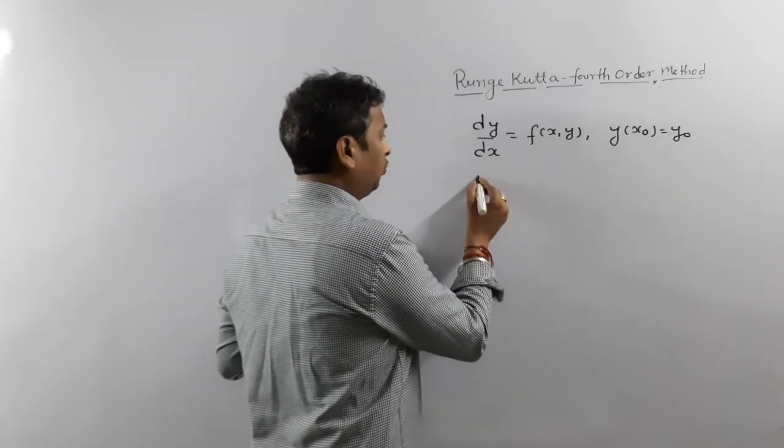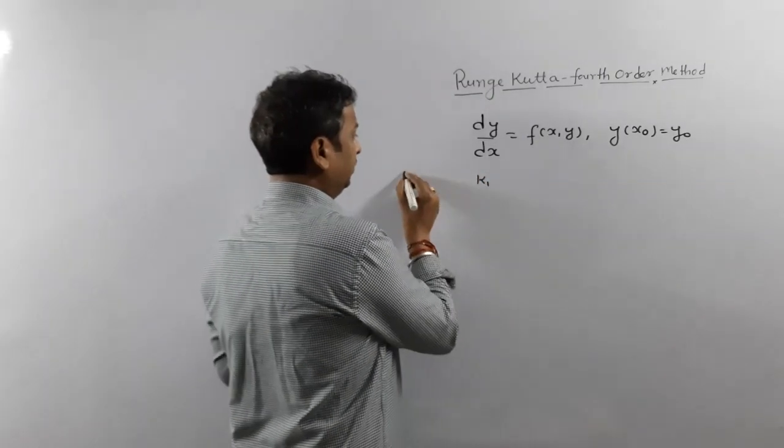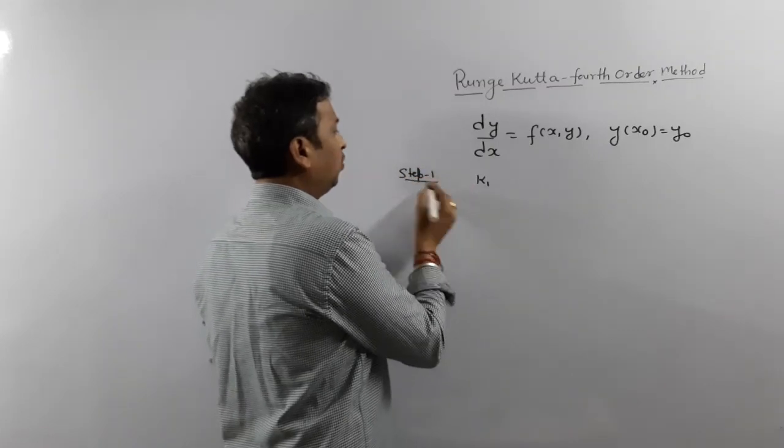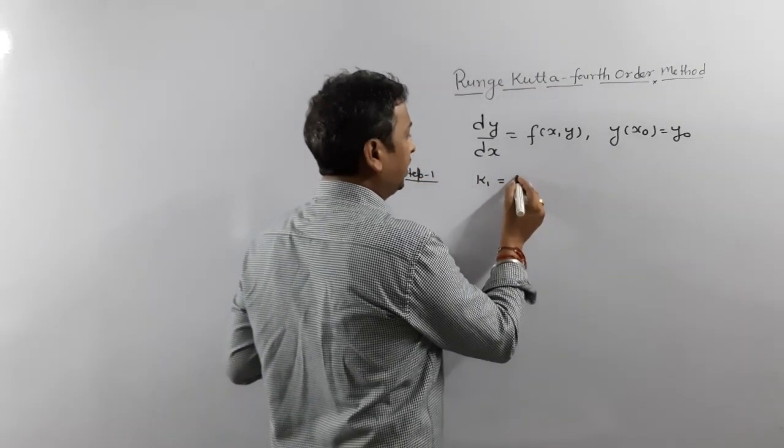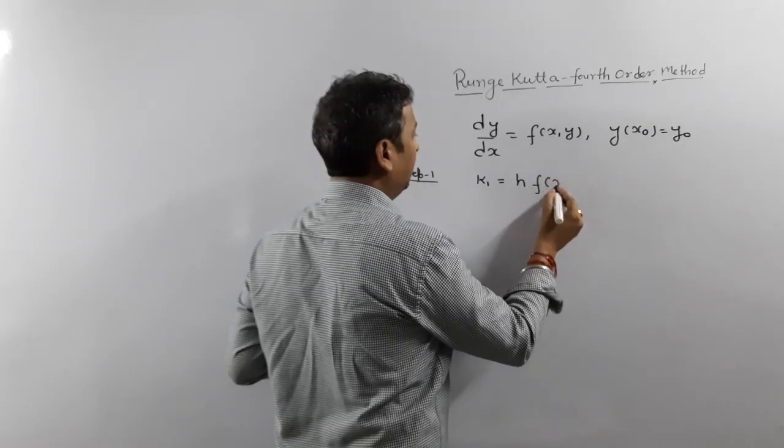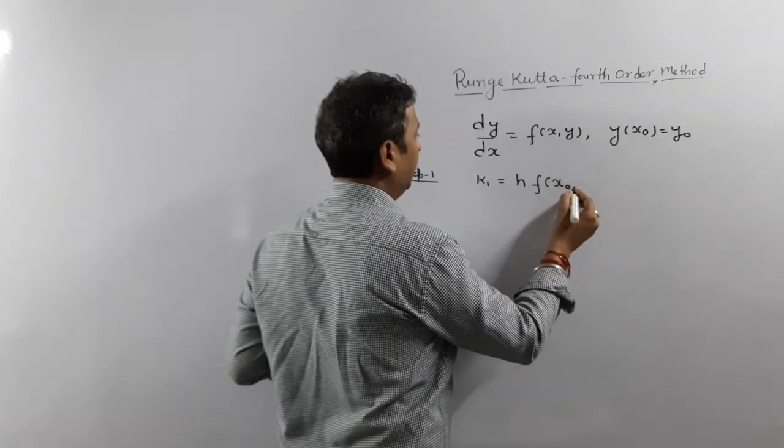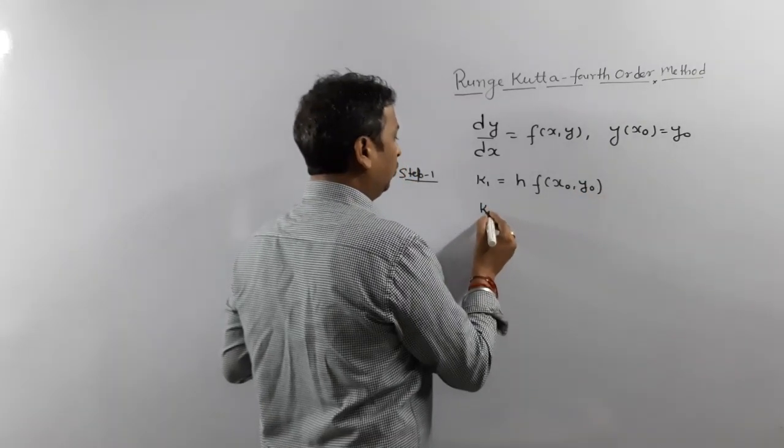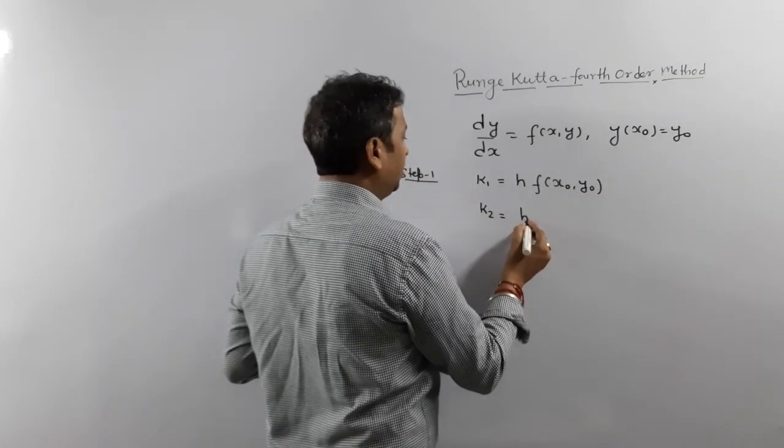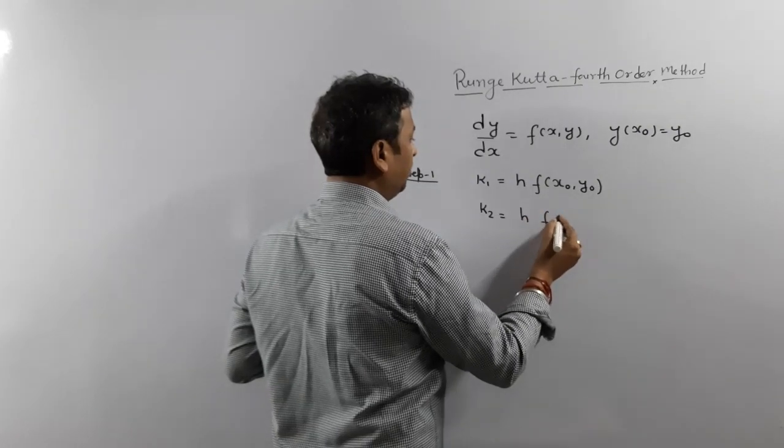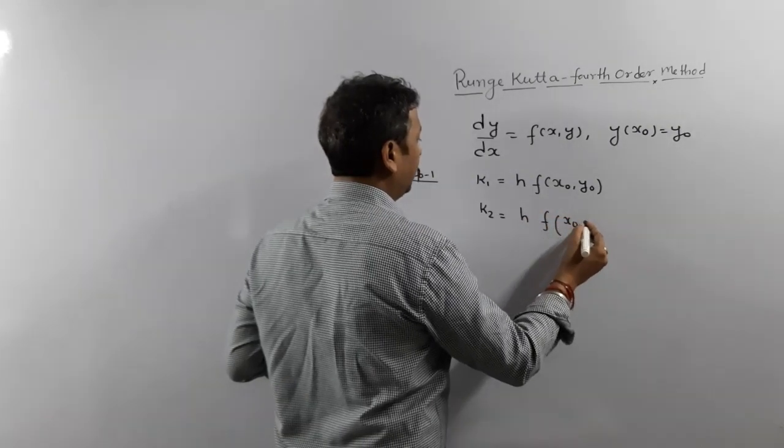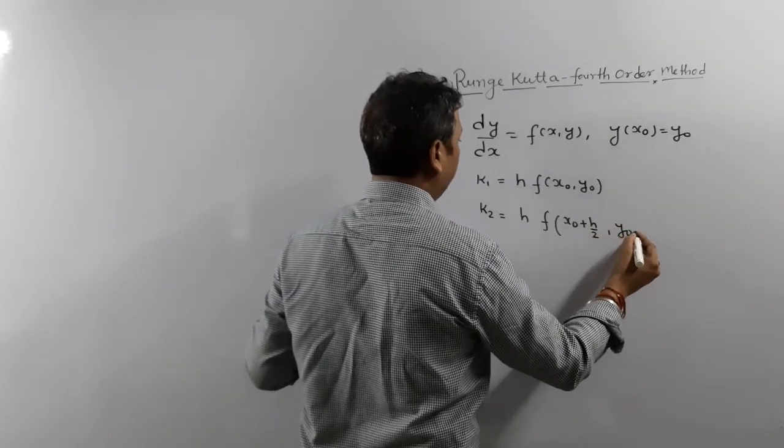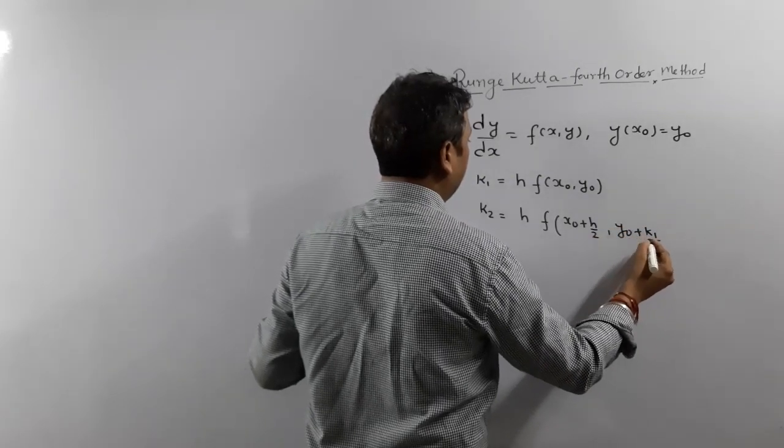Step 1: Calculate K1. What is K1? K1 is just h times function value at x0, y0. Then calculate K2. K2 is h times function value at x0 plus h/2 and y0 plus k1/2.